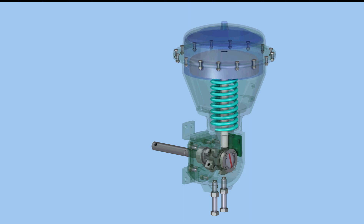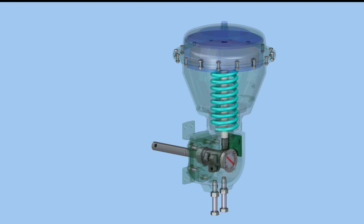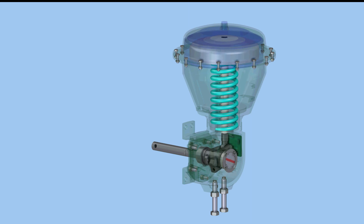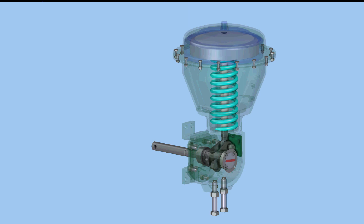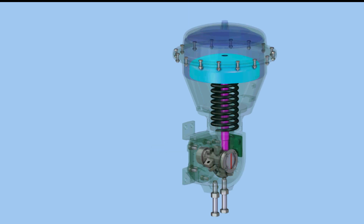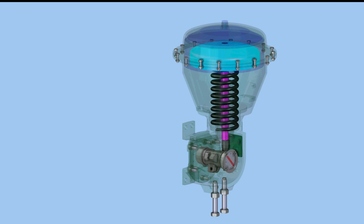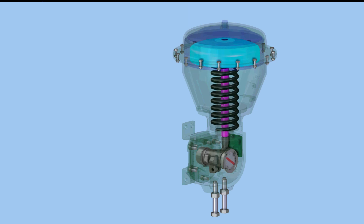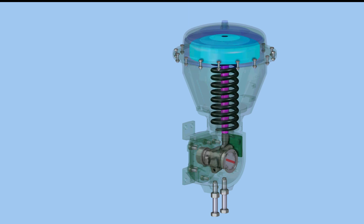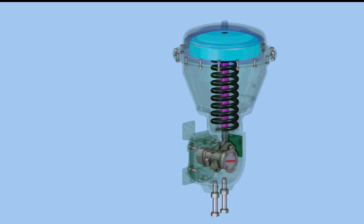Different lever styles may be used depending on the actuator design. A spring under the diaphragm plate exerts a force opposite the pneumatic pressure and moves the assembly toward the upper diaphragm casing when pressure is reduced.